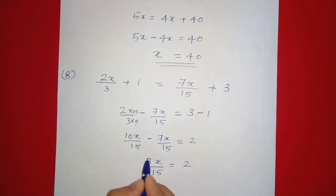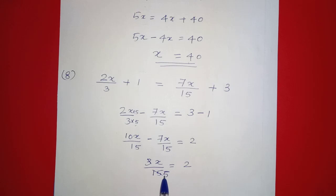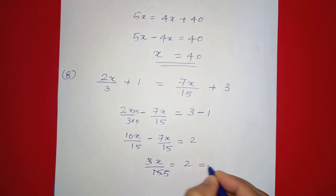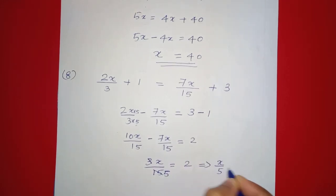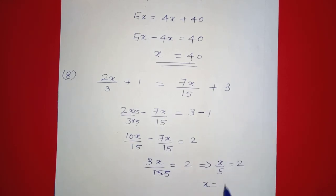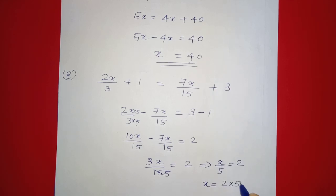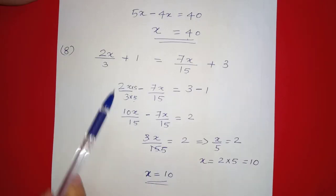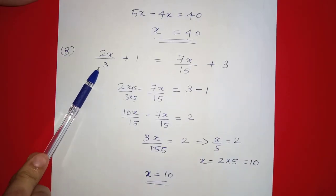We multiply through: 10x minus 7x by 15 equals 2, so 3x by 15, which simplifies to x by 5 equals 2. Multiplying both sides by 5 gives x equals 10. We verify by substituting into left-hand side and right-hand side.